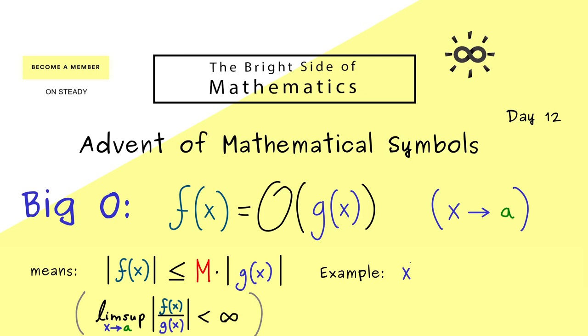So let's say we have the polynomial x² + x + 2. Then we can say this is in O(x²) if x goes to infinity.